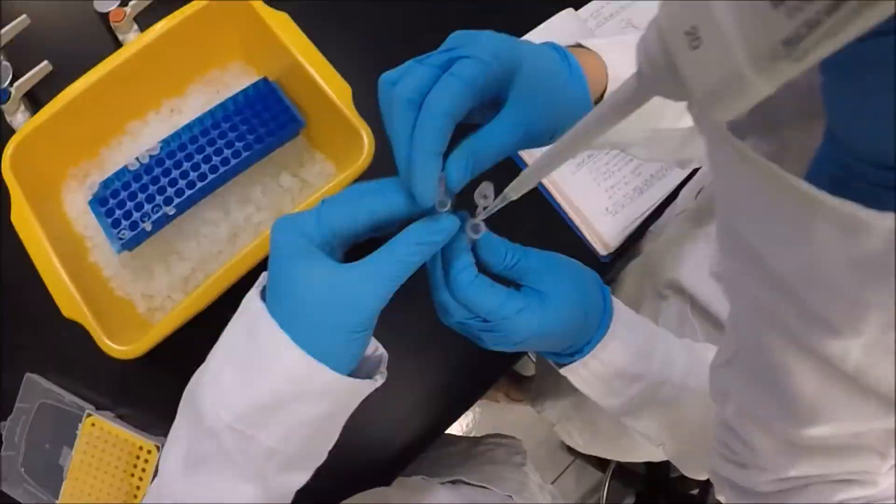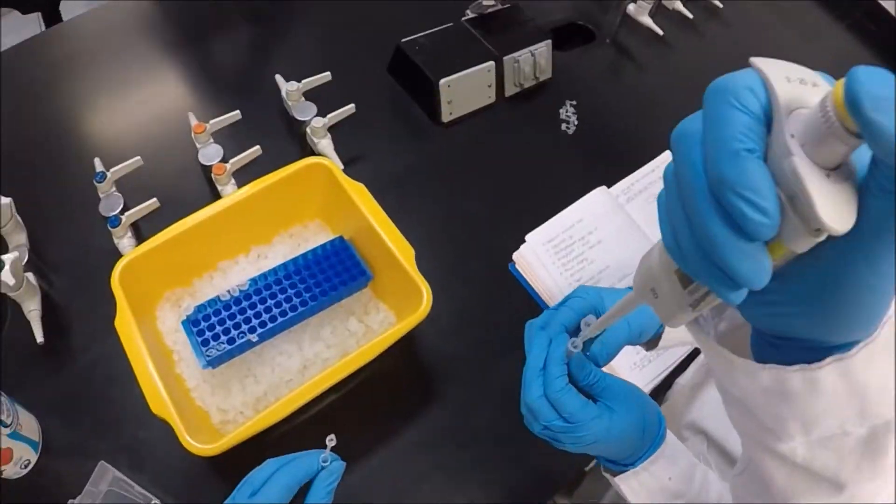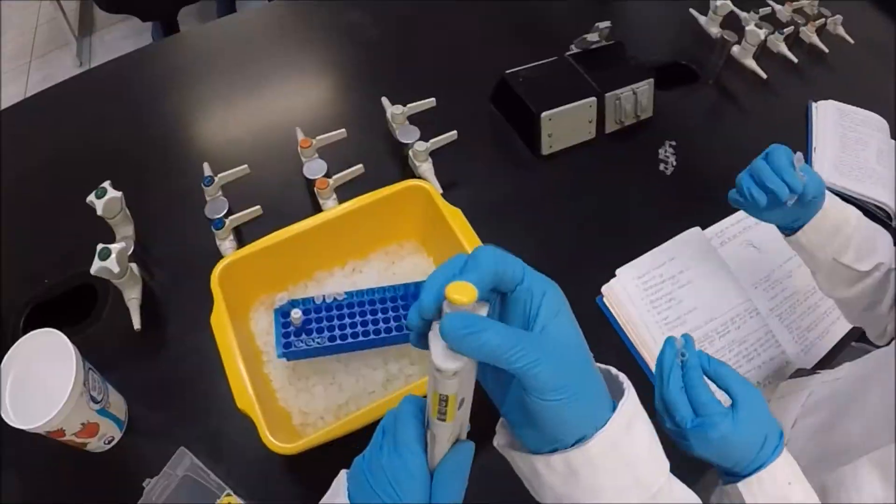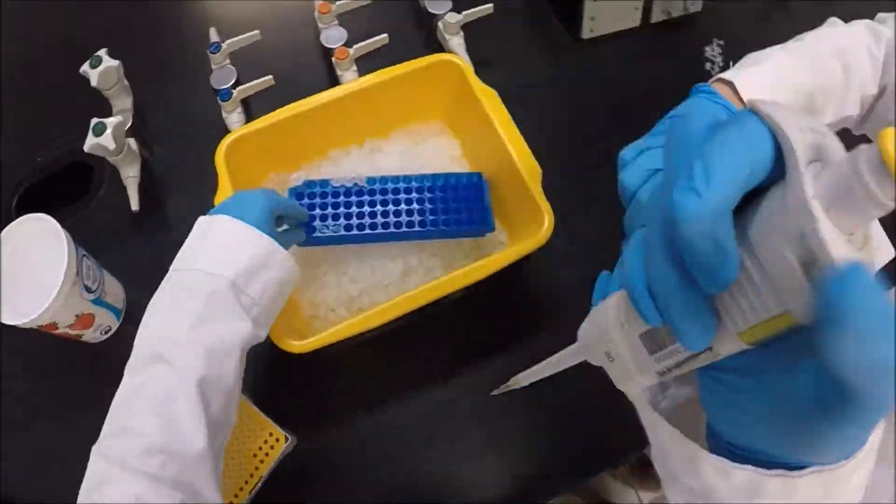Then, 8 microliters of the restriction buffer were added to the P, E, and H microtubes. Meanwhile, for the lambda tube, 5 microliters of the buffer were added to it.